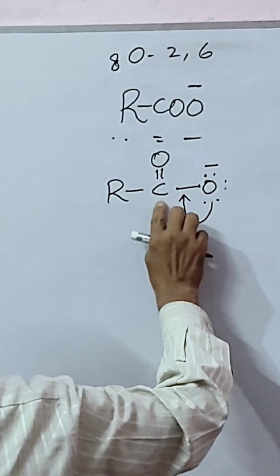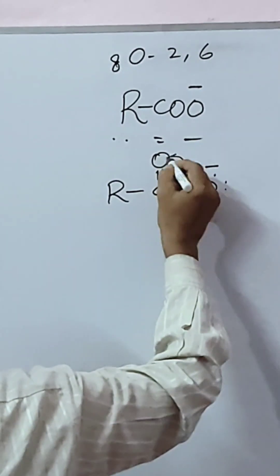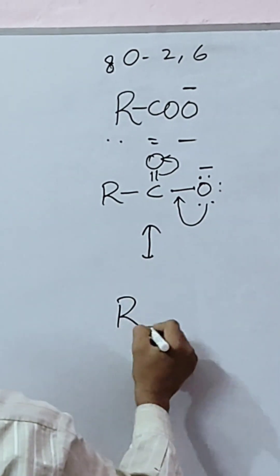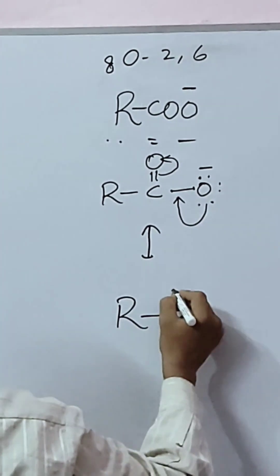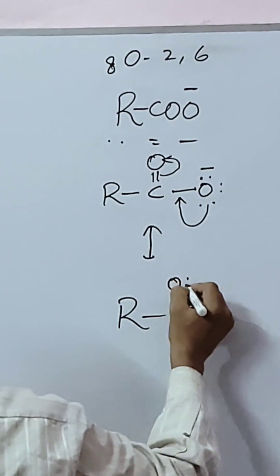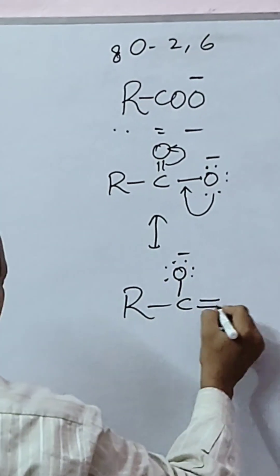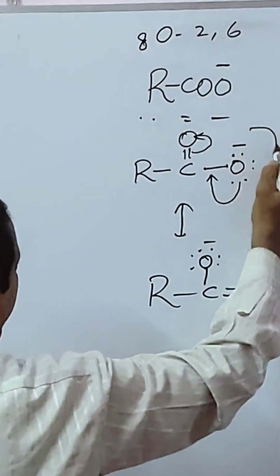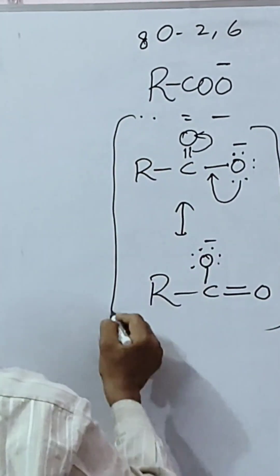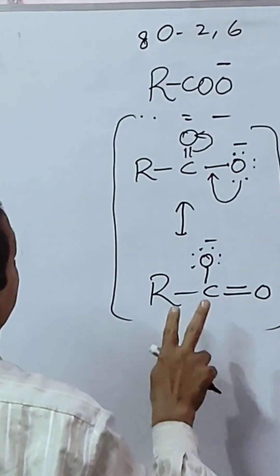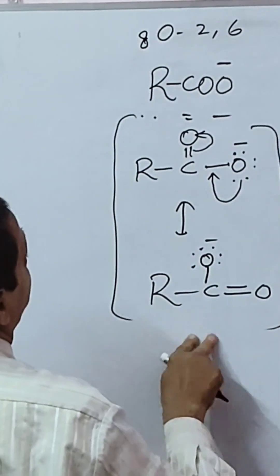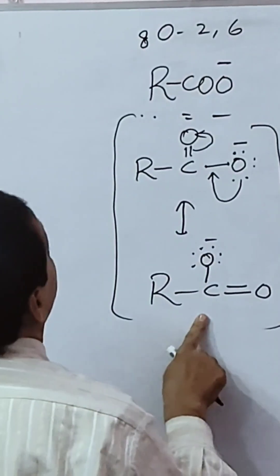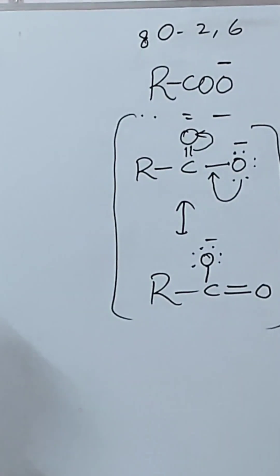So these two are resonating structures of the carboxylate ion, which is the conjugate base of carboxylic acid.